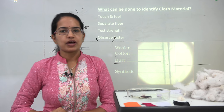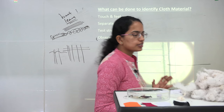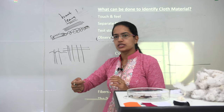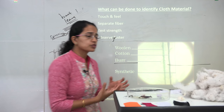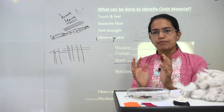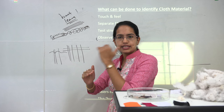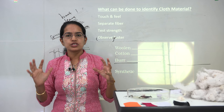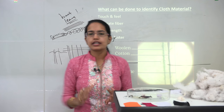You can also observe the luster and shine of the fabric, and finally separate out the fibers to identify what kind of fiber it actually is. In this class we have understood how a fabric is manufactured: fiber converts into yarn, which is the thread, and that thread finally converts into fabric.